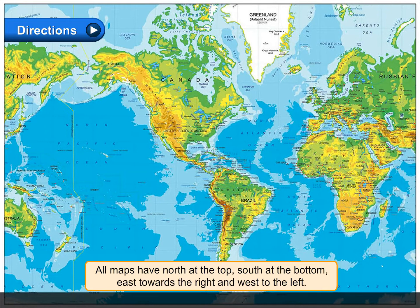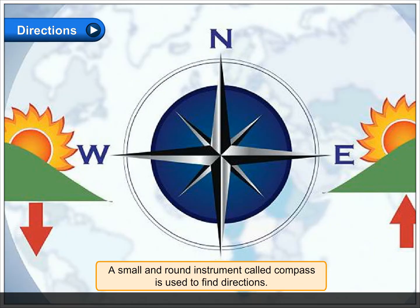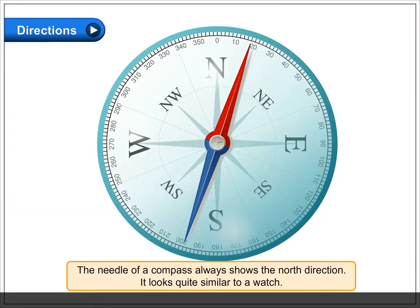A small and round instrument called a compass is used to find directions. The needle of a compass always shows the north direction. It looks quite similar to a watch.